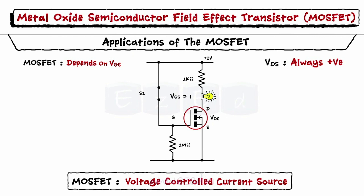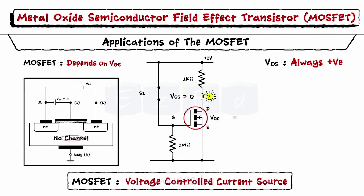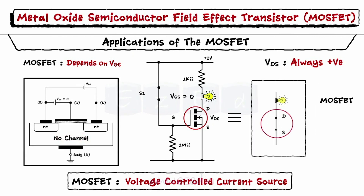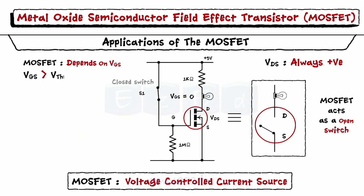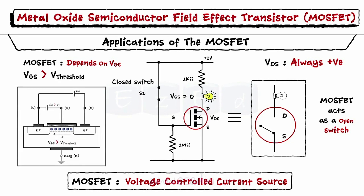When VGS is equal to zero, no channel is formed. Thus MOSFET acts as an open switch and the bulb remains off. And when VGS is increased above the threshold voltage, a channel is formed between the drain and the source and the flow of current starts. Thus MOSFET acts as a closed switch and the bulb glows.